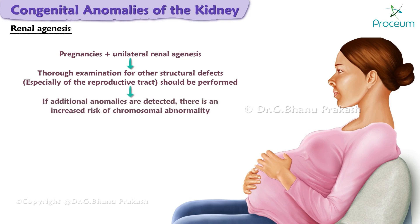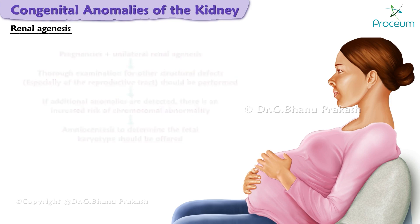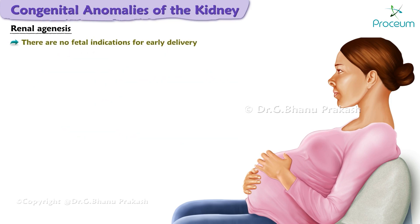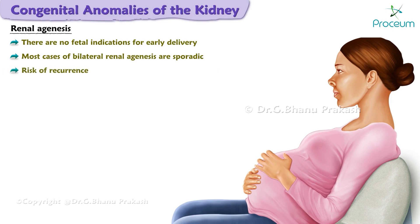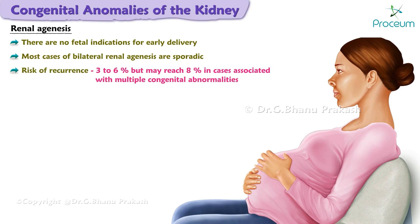For pregnancies with unilateral renal agenesis, a thorough examination for other structural defects — especially of the reproductive tract — should be performed. If additional anomalies are detected, there is an increased risk of chromosomal abnormality and amniocentesis to determine the fetal karyotype should be offered. There are no fetal indications for early delivery. Most cases of bilateral renal agenesis are sporadic, with a recurrence risk of about three to six percent, potentially reaching up to eight percent in cases with multiple congenital abnormalities. Approximately nine to fourteen percent of first-degree relatives of patients with bilateral renal agenesis or dysgenesis have renal abnormalities.